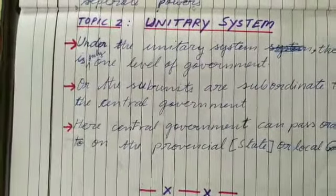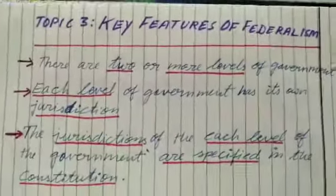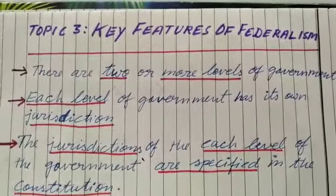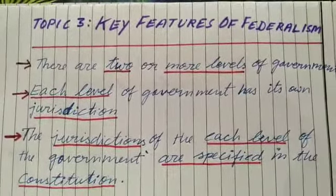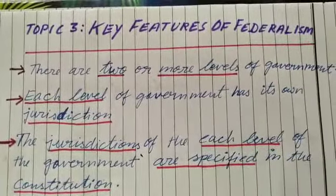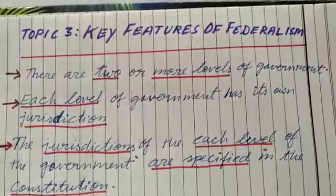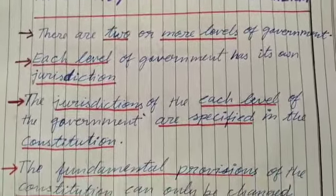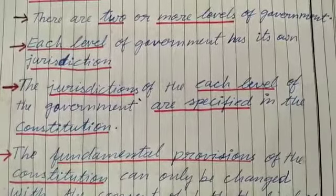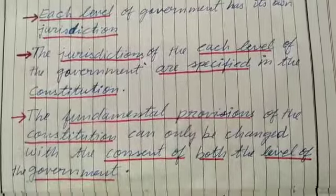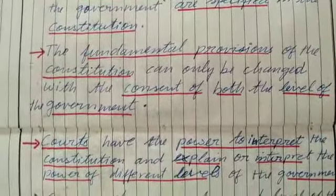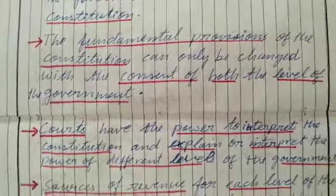Now let us see what are the key features of federalism. First and the most important key feature of federalism is that there are two or more levels of government. Each level of government has its own jurisdiction — the area over which someone has legal authority. The jurisdiction of each level of government is specified in the constitution, and the fundamental provisions of the constitution cannot be changed without the consent of both levels of government.